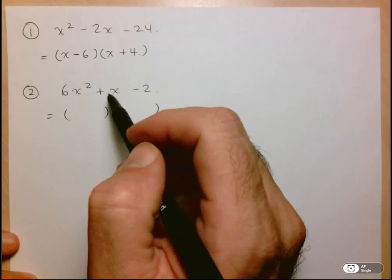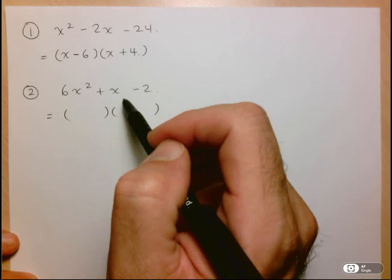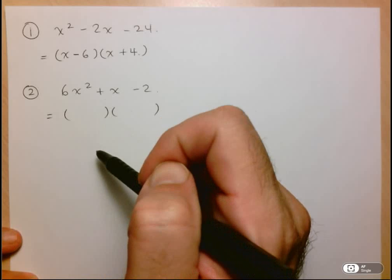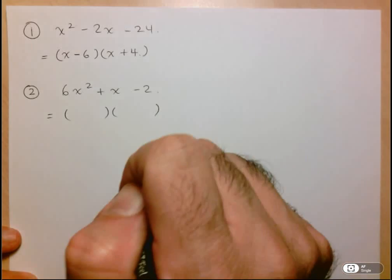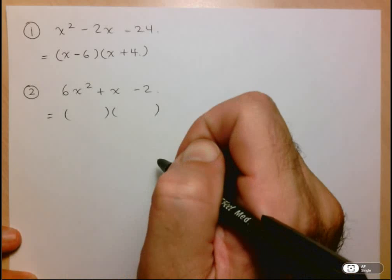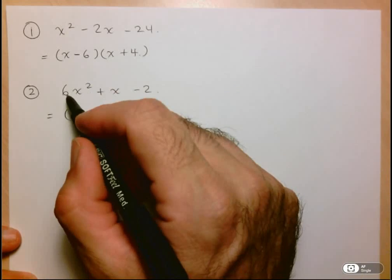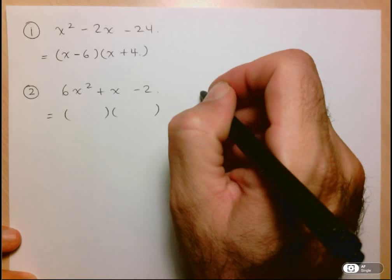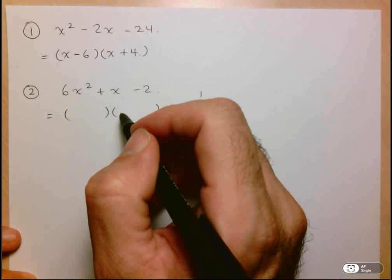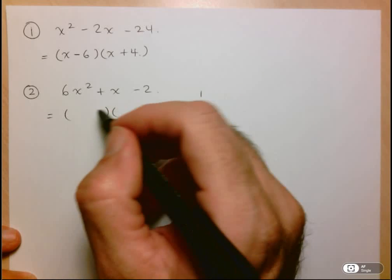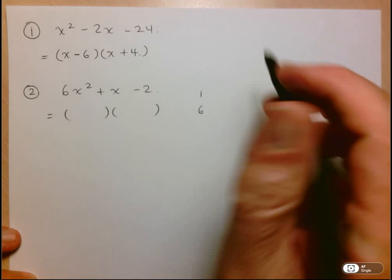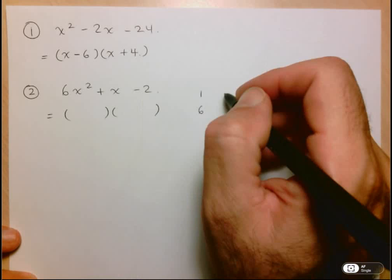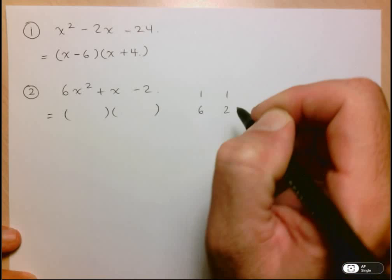Now with something simple like this, you can probably just do the trial and error in your head. But a little trick that I use is to just create a little chart on the side. So let's say I know 6 can be 6 and 1. So say 1 and 6 are the two possible numbers, the two possible coefficients of x in the first position. And here I have only one possibility. So it's got to be a 1 and a 2.